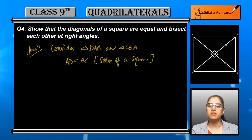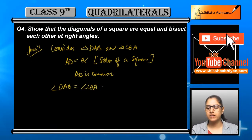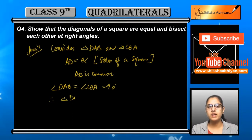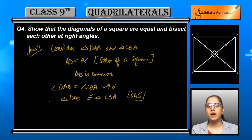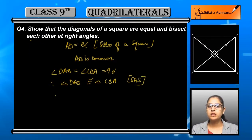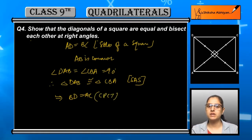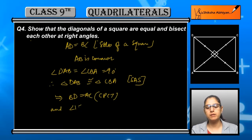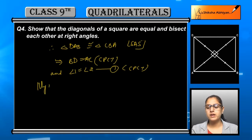AB is a common side in both triangles. Next, angle DAB is equal to angle CBA, both 90 degrees, because a square is given and all angles are 90 degrees. By these three reasons we can say that triangle DAB and triangle CBA are congruent by SAS congruence rule. Therefore, BD is equal to AC — the two diagonals are equal — by CPCT. So the first thing, diagonal equal, is proved.